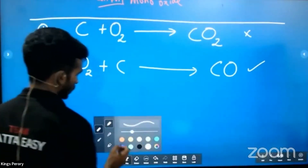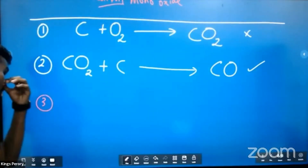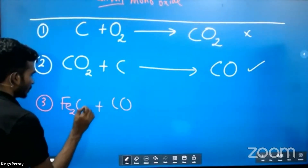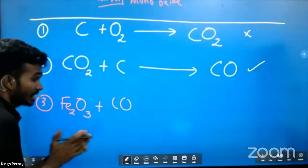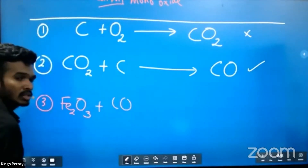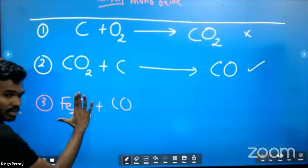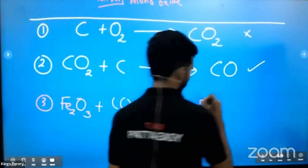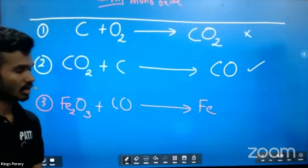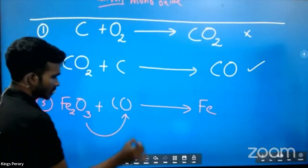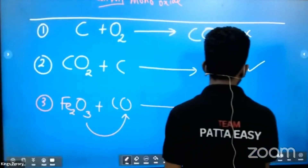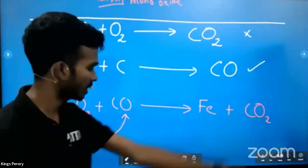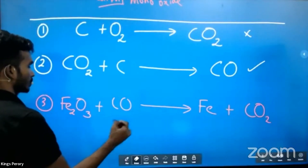The third and most important job: make carbon monoxide meet with Fe2O3. Carbon monoxide will remove all the oxygen from hematite. When it removes all the oxygen, iron (Fe) remains — iron is extracted. The carbon monoxide that took the oxygen becomes carbon dioxide: monoxide becomes dioxide. Iron is extracted. Balance the equation using 1-3-2-3 balancing.